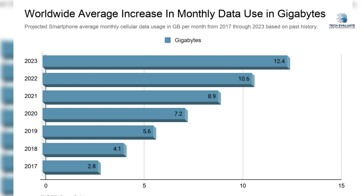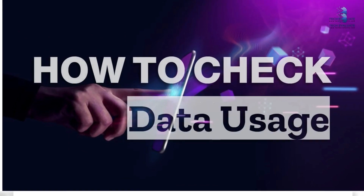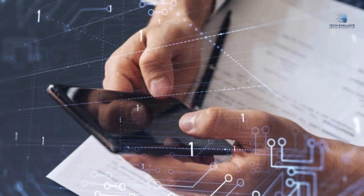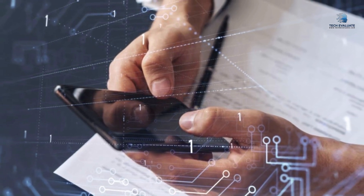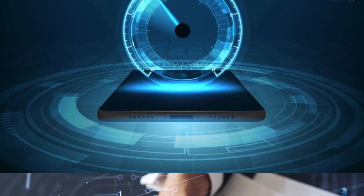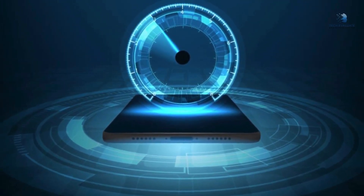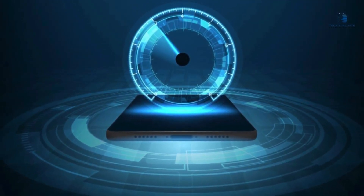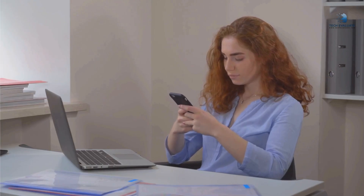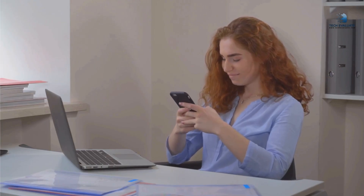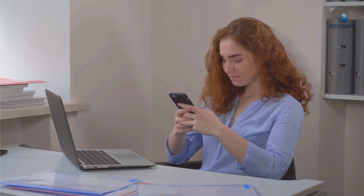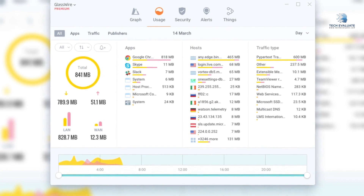This guide will also equip you with tips and tricks to regulate your data usage and ensure you always remain within your data cap. The first thing you should do when you discover your data is being used up too fast is to determine the culprit. Checking your data usage is essential for all, including people on limited and unlimited plans, because although you won't exhaust your limit on an unlimited plan, your data speed starts to slow down or be throttled after you exceed certain limits.